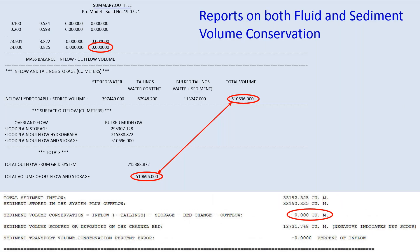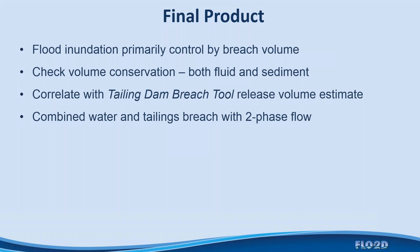Flow2D reports on both fluid and sediment volume conservation, so you can verify that the volume is being modeled accurately. The summary output file shows essentially zero volume conservation error — no error to the nearest thousandth of a cubic meter in the sediment budget. Any volumetric error is typically very small, and the volume in the reservoir that gets routed downstream is essentially zero at the end of the simulation.